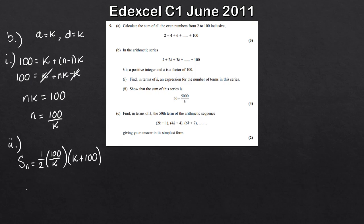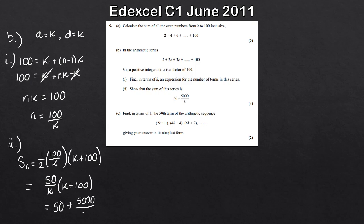Simplifying: a half of 100 over K gives 50 over K, multiplied by (K plus 100). Then 50 over K times K leaves us with 50, and 50 over K times 100 gives 5000 over K. So the sum equals 50 plus 5000 over K, which is exactly what we needed to show.